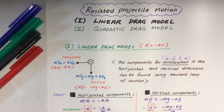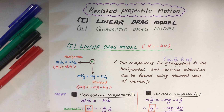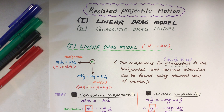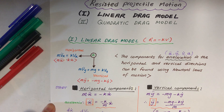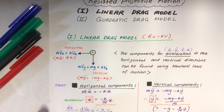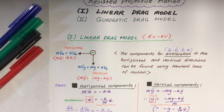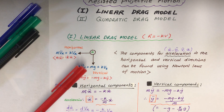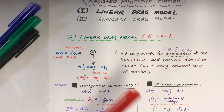Okay everyone, it's mechanics and today's lesson is all about resistive projectile motion, and there's two parts. First one is the linear drag model and the second part is the quadratic drag model. So I'm going to start with the linear drag model. We're going to use r equals minus kv, and the quadratic will be r equals minus kv squared. This is a little introduction to what we're going to do.